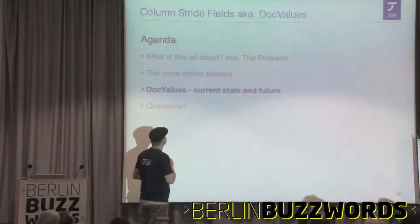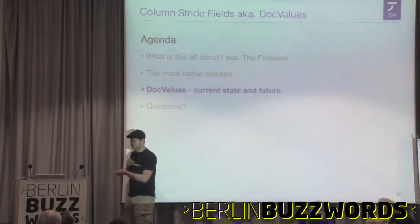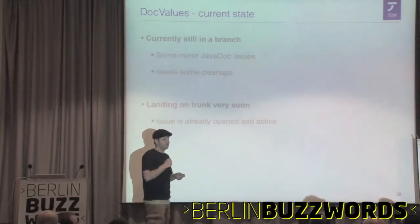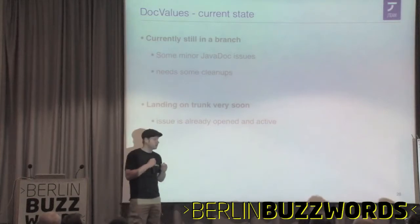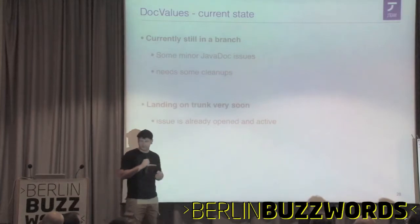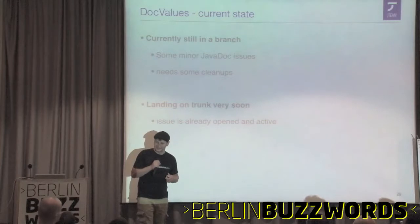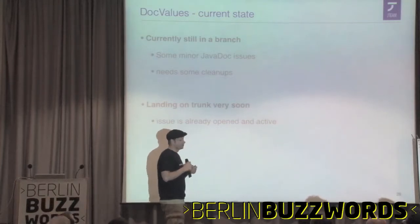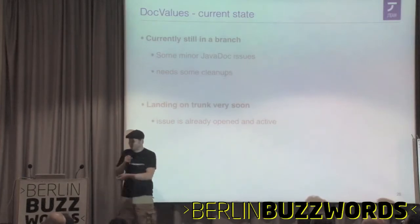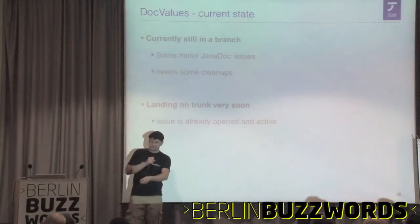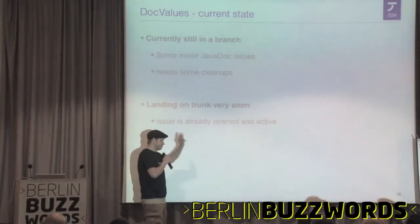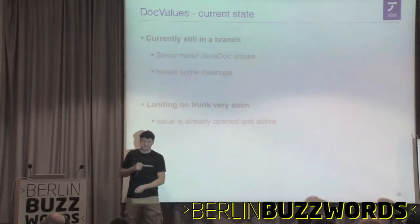Current state: I had to fix the API this morning because I changed it two days ago. It's currently still in a branch, but I'm very confident to commit it to trunk either this week or next week. There are two committers heavily working on it — me, Mike, and Candlez — and hopefully Uwe helping with the merge. Those commit mails are going to be huge. If you do statistics over the machine source code, it looks like Uwe has written millions of lines of code because he does a lot of merges.